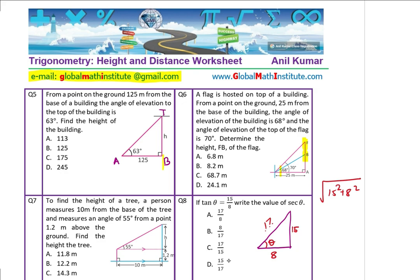So, what is secant theta? Secant theta, as you know, is 1 over cos theta, right? It is the reciprocal of cos theta and now I think that should be easy. 17 over 8 would be the answer, right? So, option A will be the right answer. Perfect.